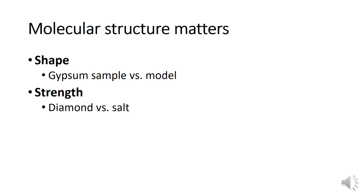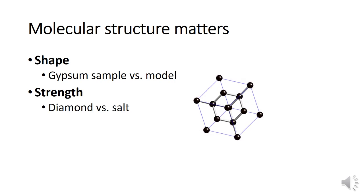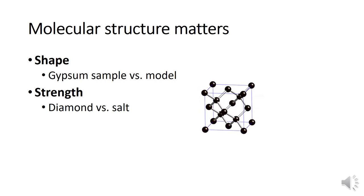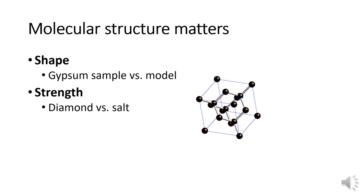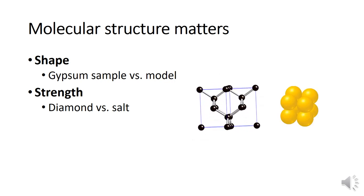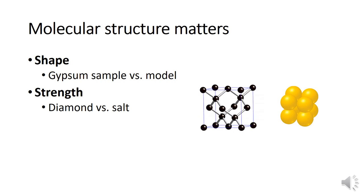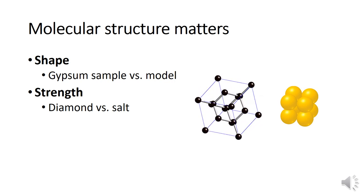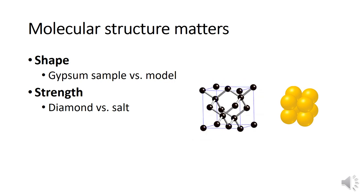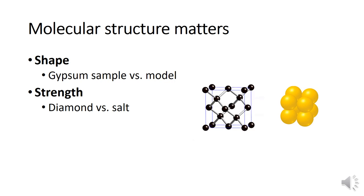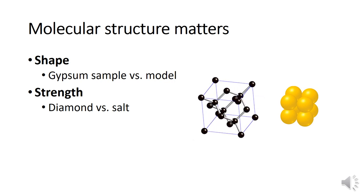Here's an example of diamond. Its structure has a bunch of carbons in a tetrahedral arrangement, and those bonds are covalent. Whereas in salt you have a pretty weak solid — salt breaks pretty easily. You don't see people walking around with salt rings on their fingers. It's ionic. So the molecular structure influences the strength of the material if you think about the bonding.